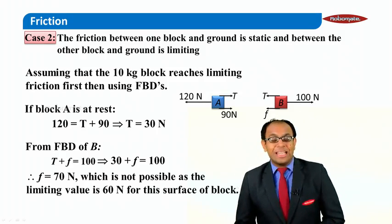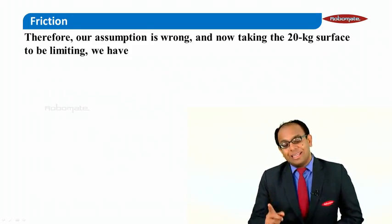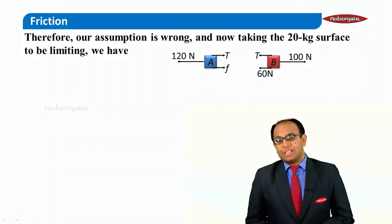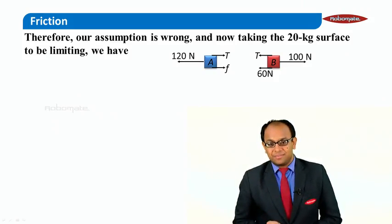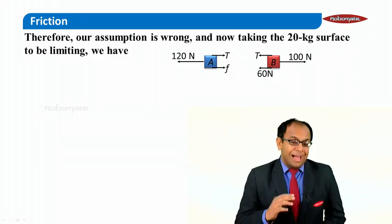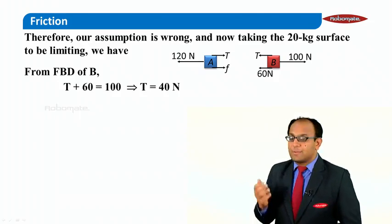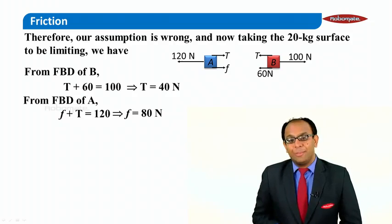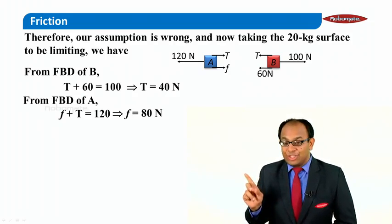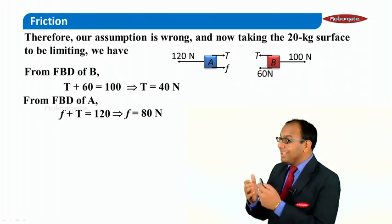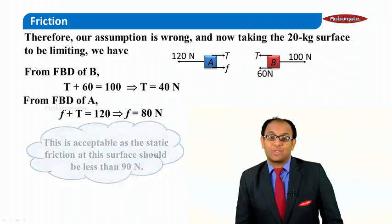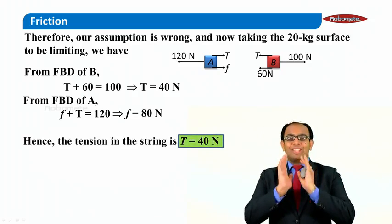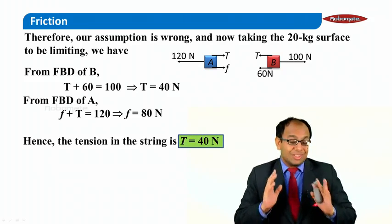The only remaining possibility is that B attains its limiting friction first. On B, friction will be limiting at 60 N. Balancing B's free body diagram, tension becomes 40 N. Applying this same tension of 40 N to block A, the friction on A works out to be 80 N. Since 80 N is less than A's limiting friction of 90 N, this is valid. Therefore, we conclude that the tension in the string between the two blocks is 40 Newtons.